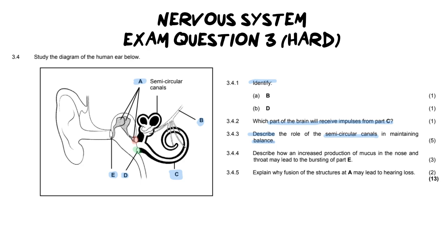So the next question is a little bit tricky application question. It requires you to know quite a bit of the structure of the ear and the functions of these components. And it says, describe how an increased production of mucus in the nose and throat may lead to a bursting of Part E. So basically, Part E is our tympanic membrane, our eardrum, and they're saying that mucus is building up inside the throat and the nose. How would that lead to the eardrum bursting?